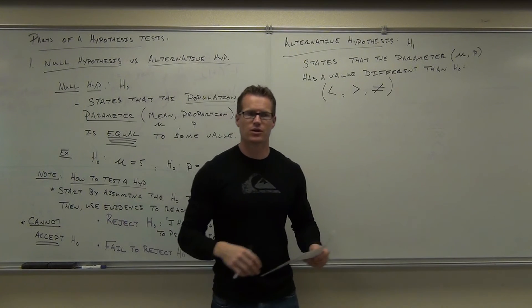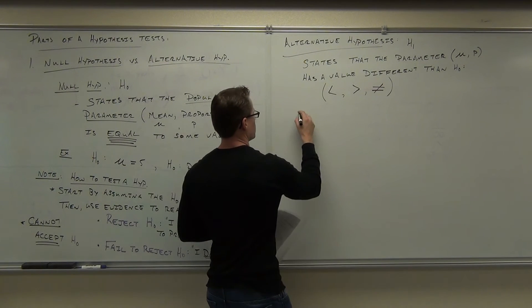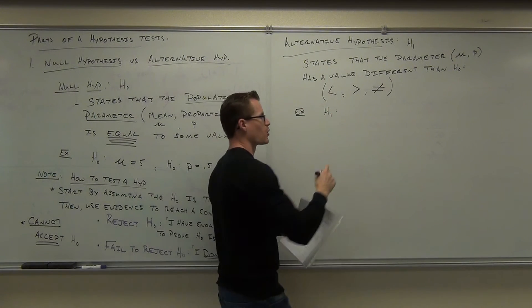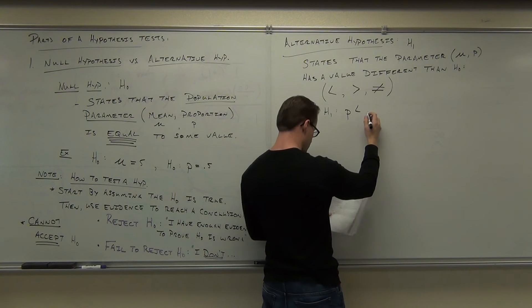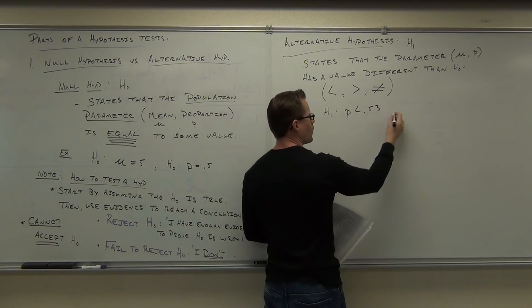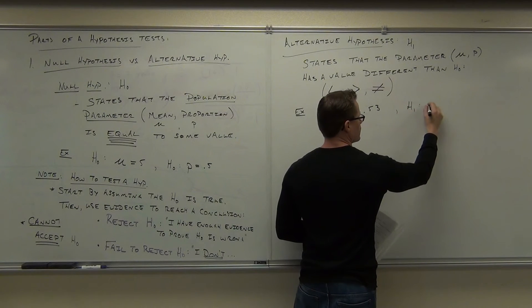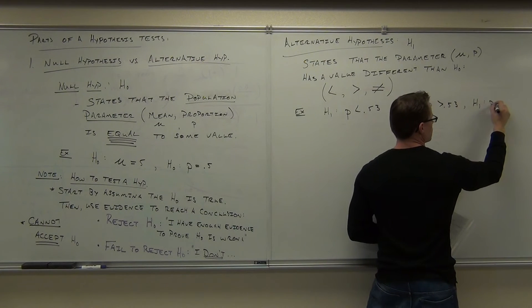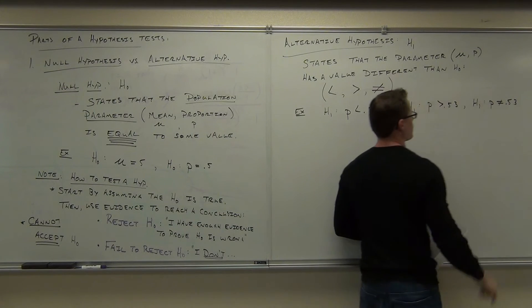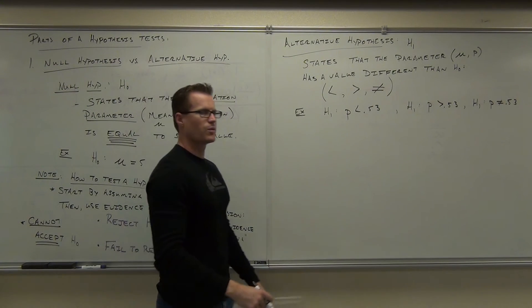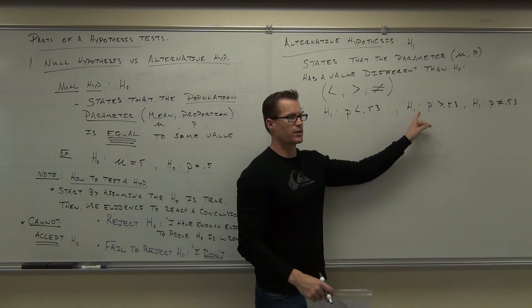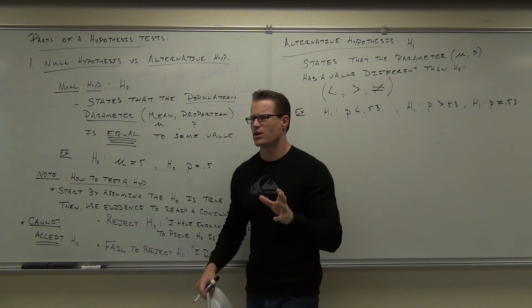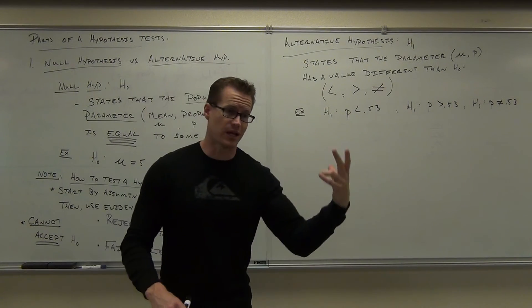Let me give you an example of how you're going to see H sub one. For proportions, H sub one might be: proportion less than 0.53, or greater than, or not equal to. Those are really the only three ways that you're going to see H sub one, the alternative hypothesis. We'll get to how you find out whether it's less than, greater than, or not equal to in a bit.